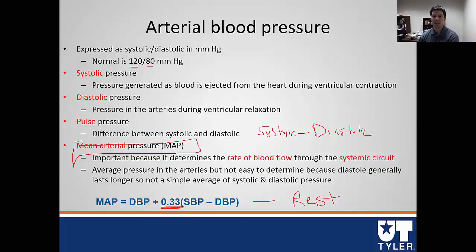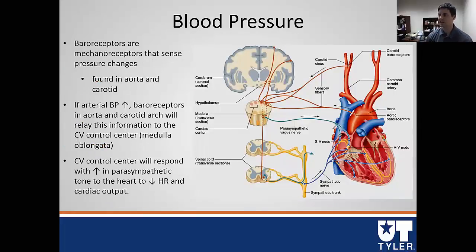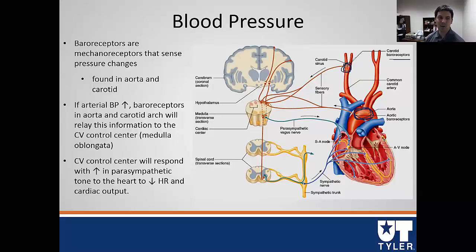So how do we regulate blood pressure? We have mechanosensors known as baroreceptors found in two places: one in the aorta and one in the carotid artery in the neck. These are mechanoreceptors that sense pressure changes. If arterial blood pressure increases, baroreceptors in one of these two areas send sensory information via afferent nerves to our cardiovascular control center in the medulla oblongata.